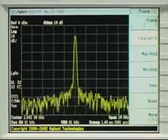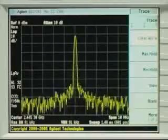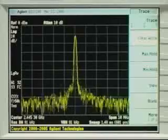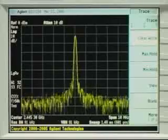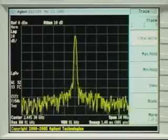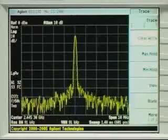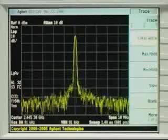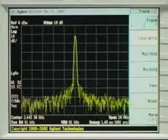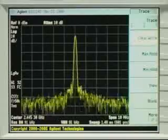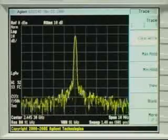The challenge for both instruments is to see how quickly they can characterize the behavior of this signal so that the user can identify the problem. Both the PSA and the RSA 6100A have been set to a 10 MHz span, both with the same center frequency of 2.4453 GHz, and both have a similar resolution bandwidth.